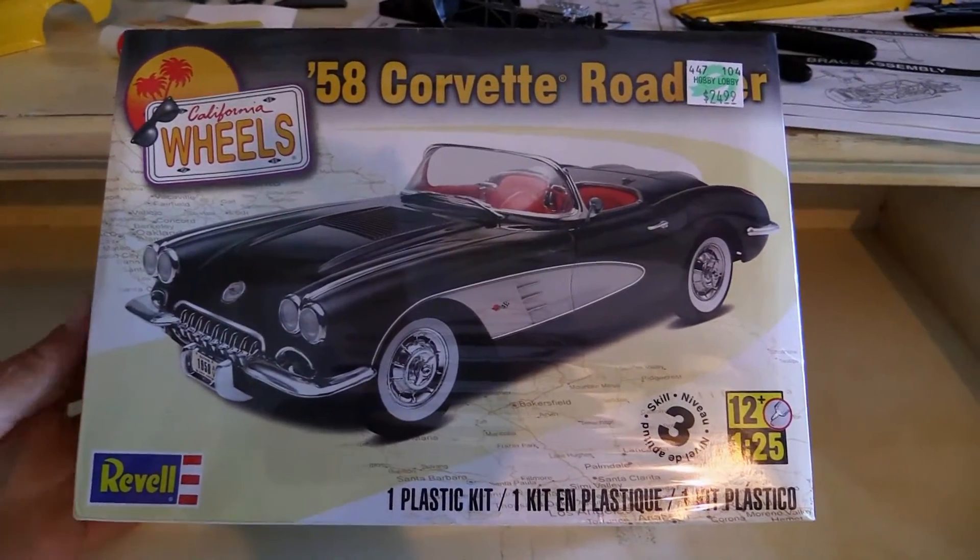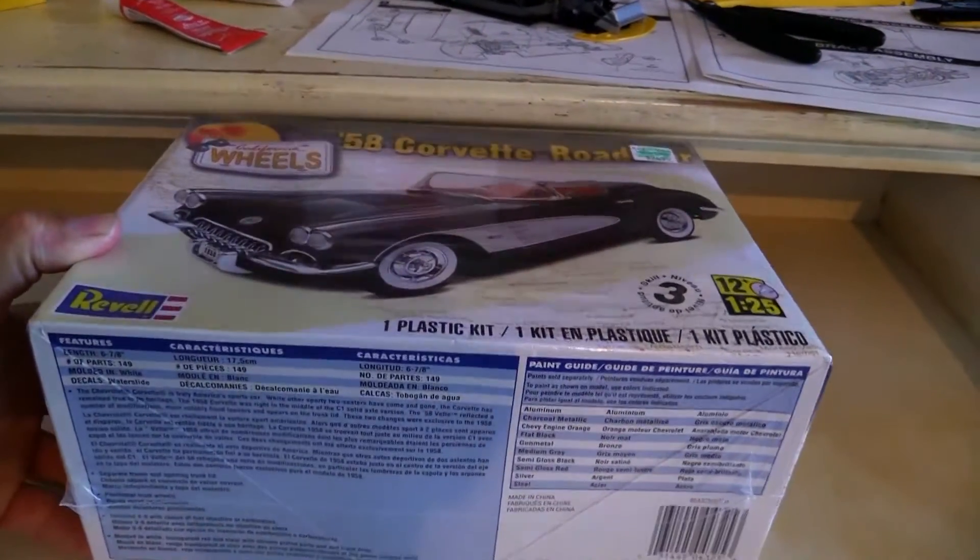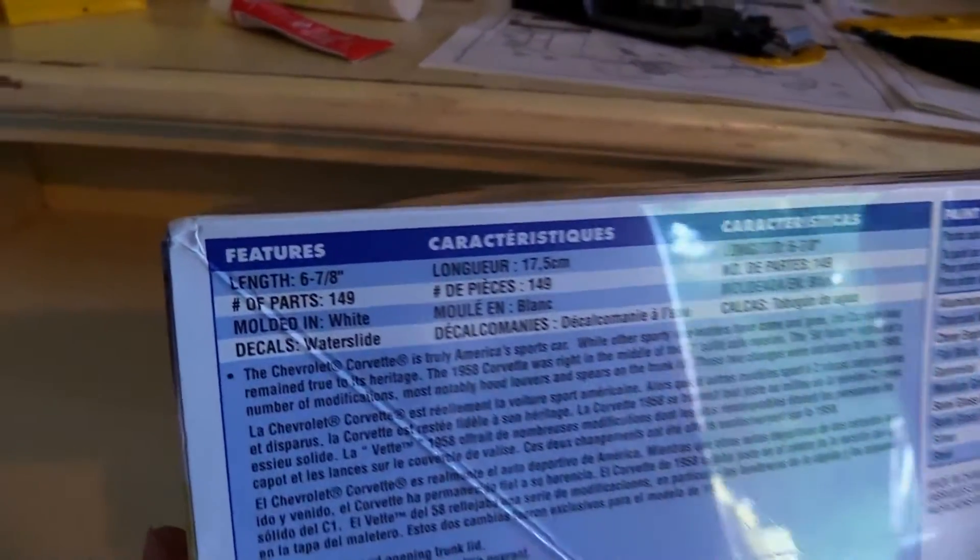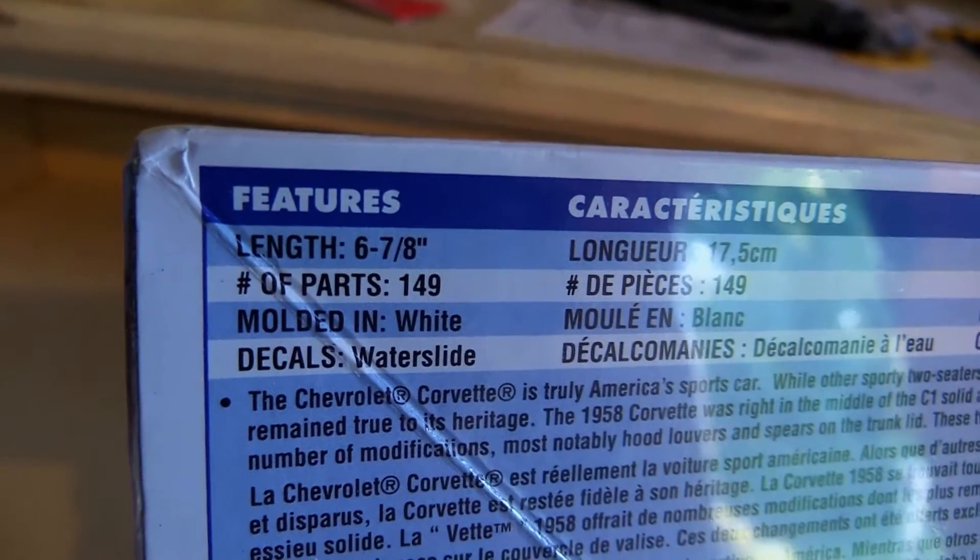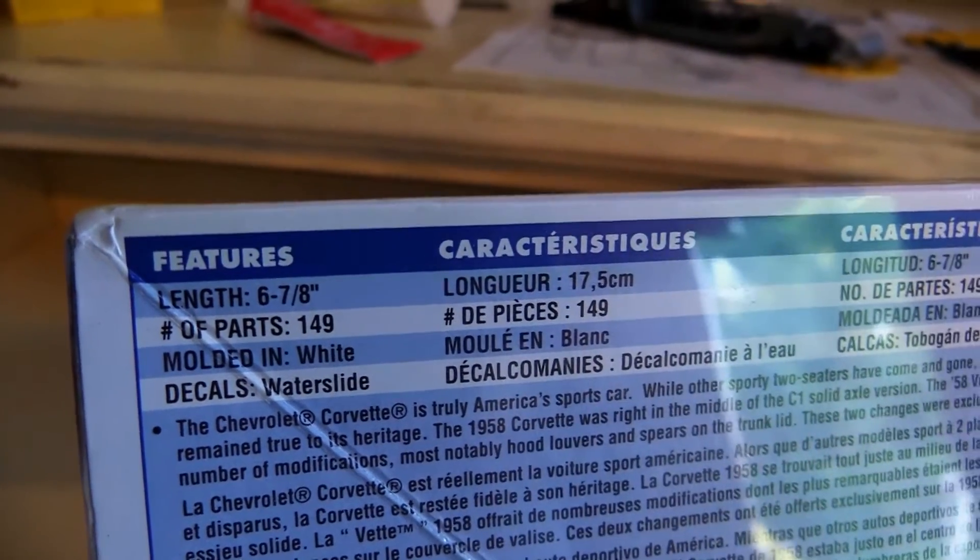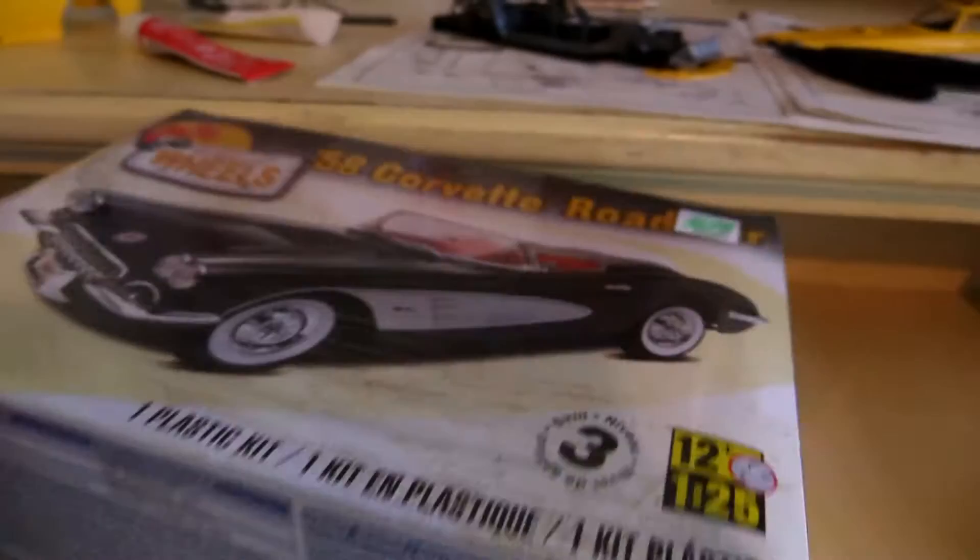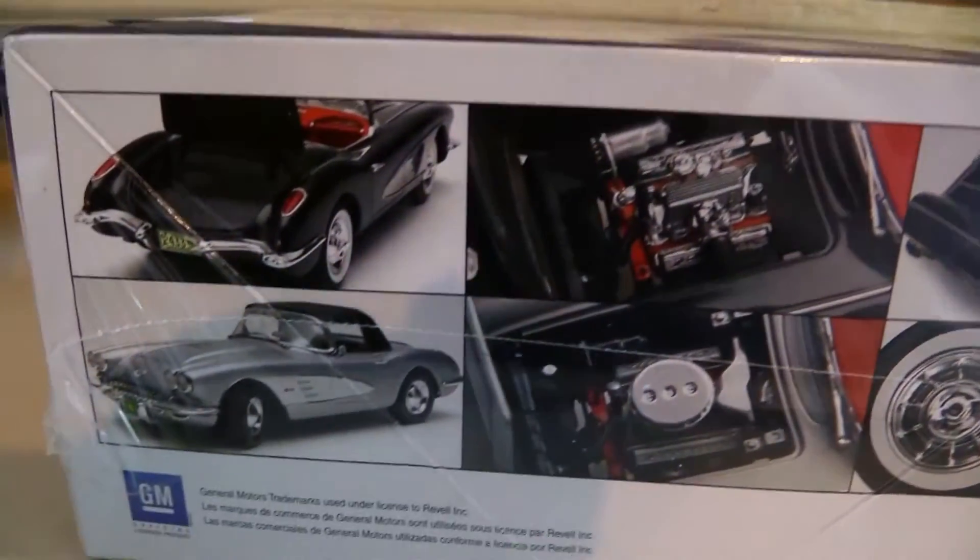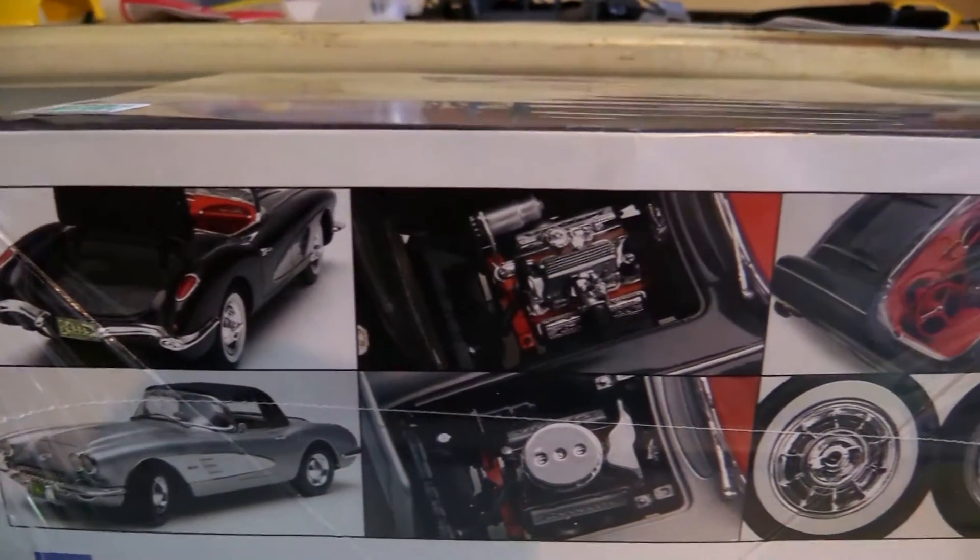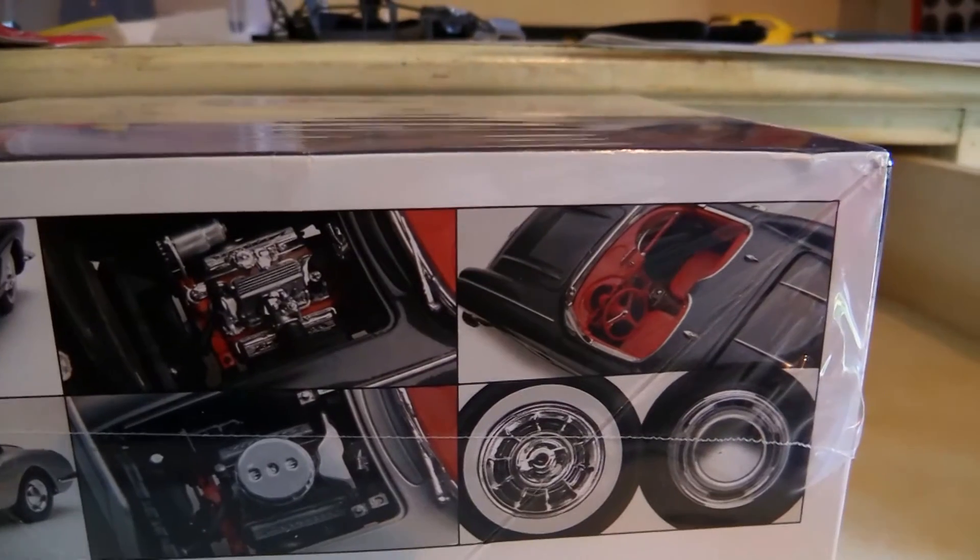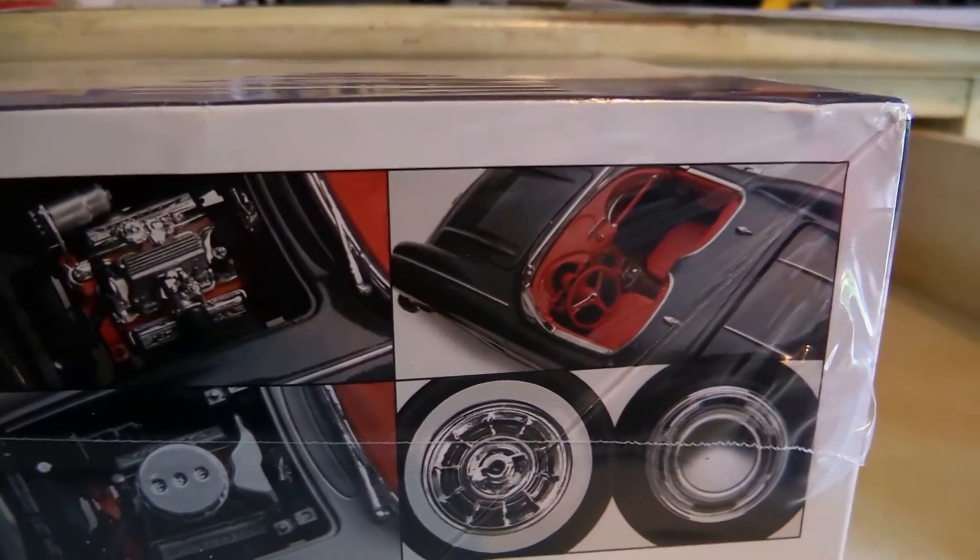So what I'm going to do today is show what comes in the box. Now this one has 149 pieces, so that's above average, molded in white, and what I see here on this side is that we have two different build options. I know y'all have seen this already, but I put these up here as a database for anybody that's wandering around YouTube looking for a review on this kit.